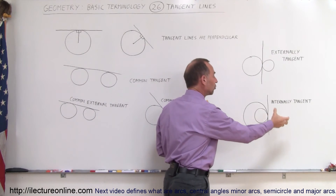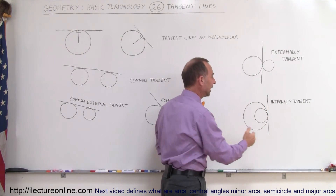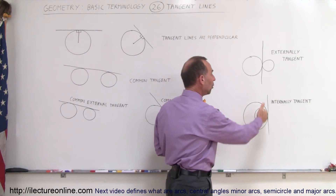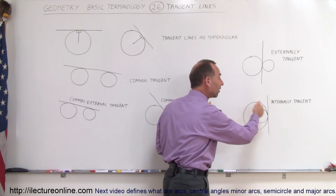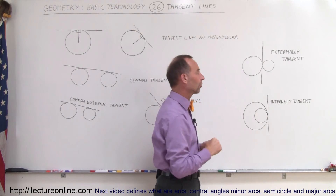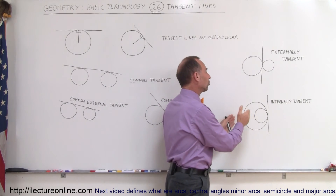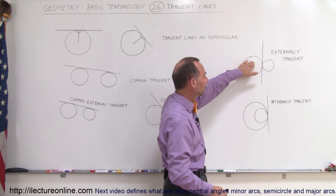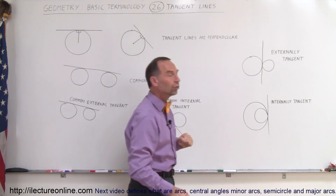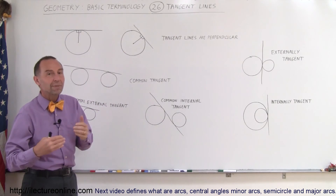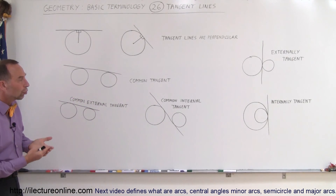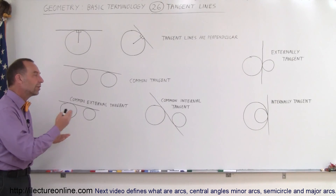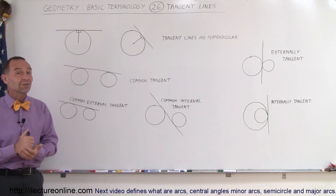But if we draw the second circle inside the first circle and they touch at the very same point — they all have one point in common where the tangent line touches the outside circle and the inside circle — then we call this the circles being internally tangent. So here the circles are externally tangent, and here the circles are internally tangent. Those are some basic terms for tangent lines when it deals with tangent lines and circles.